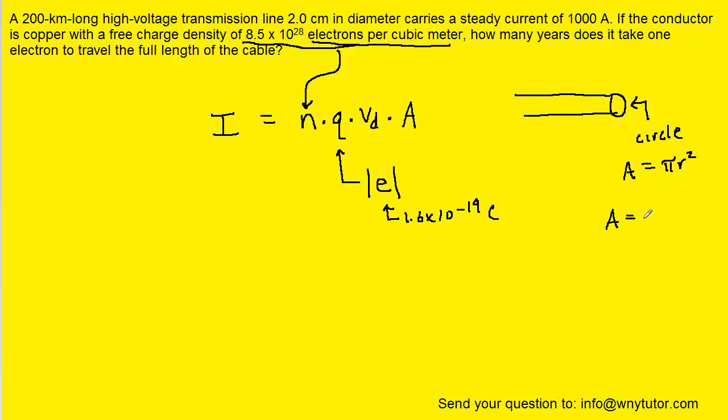We can also write that in terms of the diameter because we know the radius is simply half of the diameter, so we can call that D divided by 2. If we get fancy we can simplify: D squared over 2 squared becomes pi D squared over 4. This will be the expression for the area.